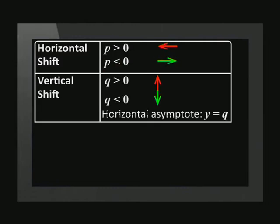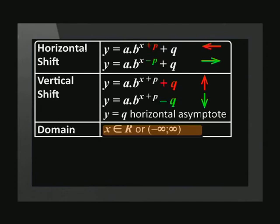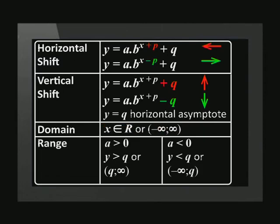The value of q shifts the graph up and down and also establishes the horizontal asymptote. The domain is x is an element of real numbers.